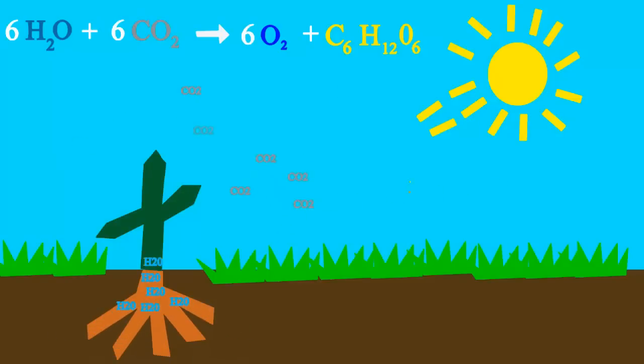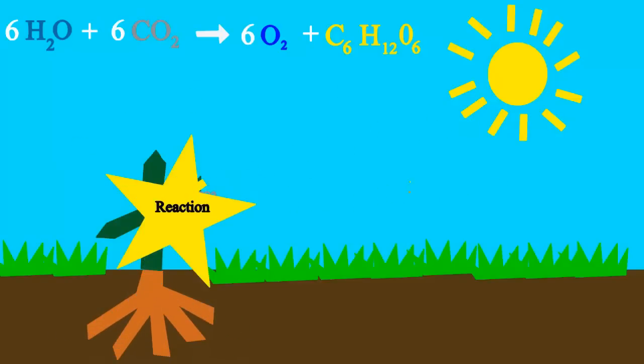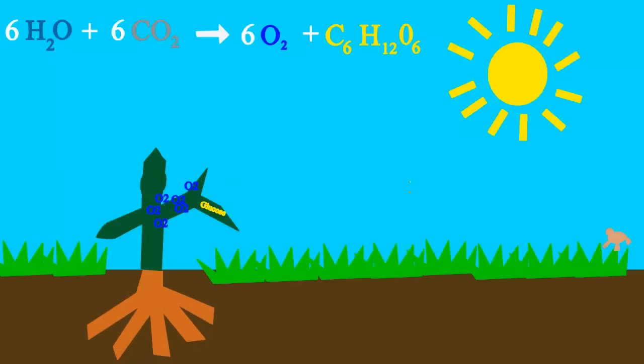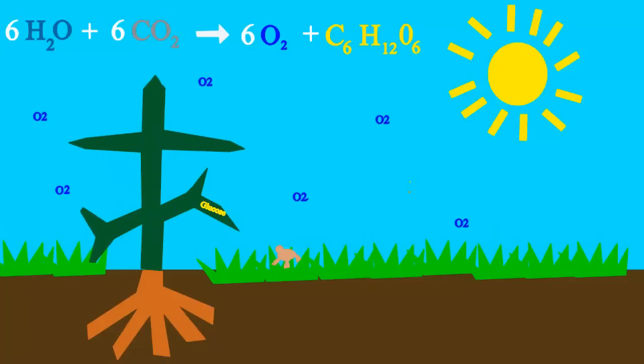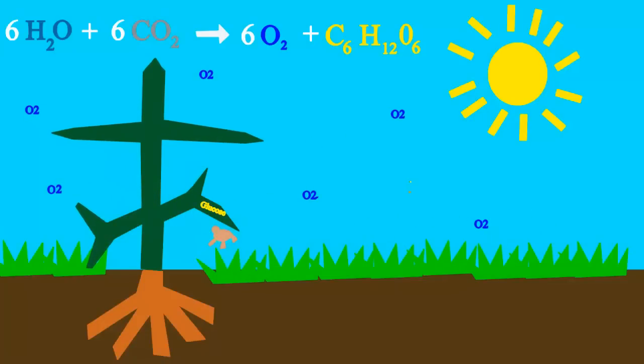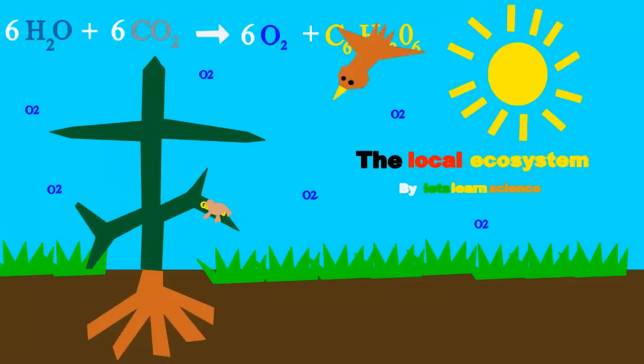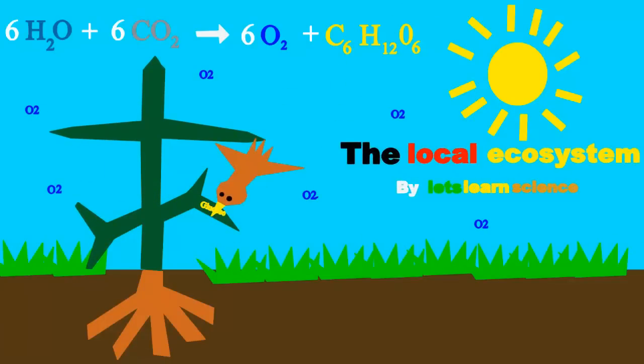Plants take water, sun and CO2 to make glucose, the sugar that they use for food. They also put oxygen into the air so we can breathe, because oxygen is everywhere.